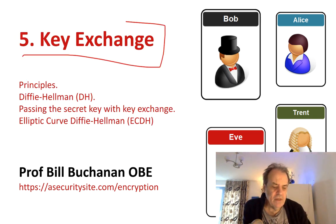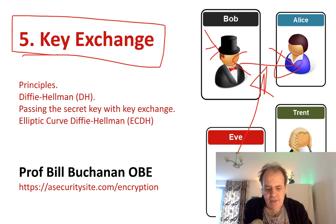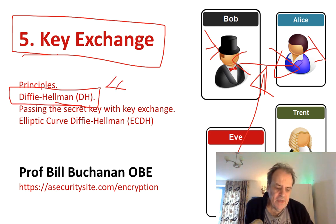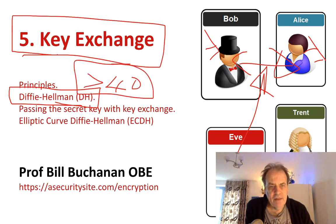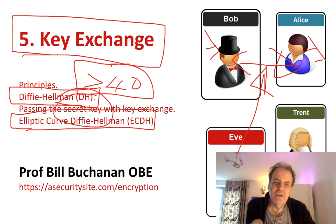In the fifth unit we look at key exchange — is it possible for Bob and Alice to communicate even though Eve is listening and still end up with the same key on either side? That's done through key exchange. The core method is often Diffie-Hellman, which has been around over 40 years but is still highly used, and its extension elliptic curve Diffie-Hellman, which is commonly used on modern systems. The important goal is passing a secret key between Bob and Alice.